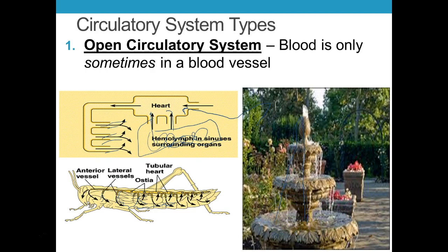Organisms that have an open circulatory system include insects, spiders, snails, and clams — organisms that are fairly simple. Some can be aquatic, some can be terrestrial. That is an open circulatory system.